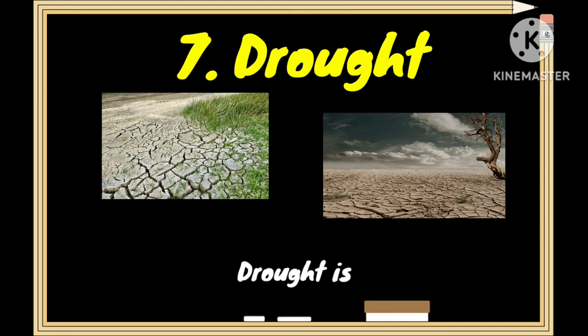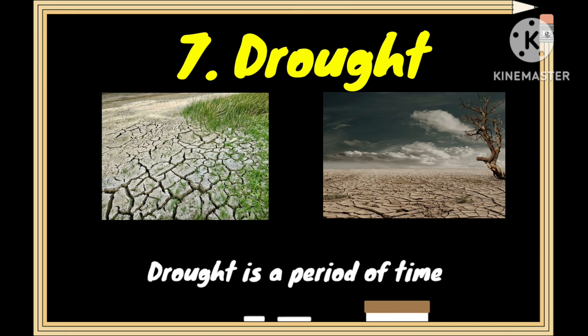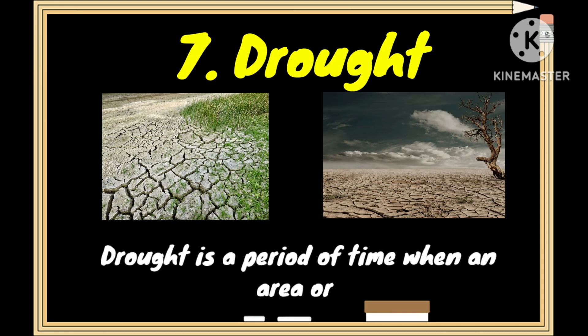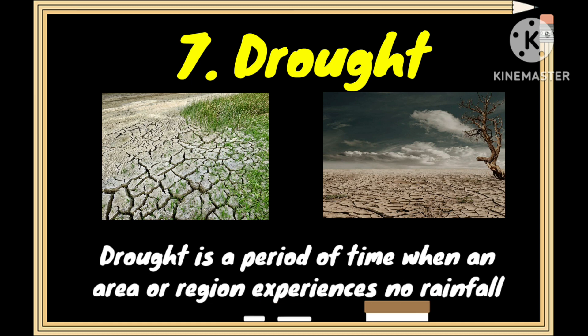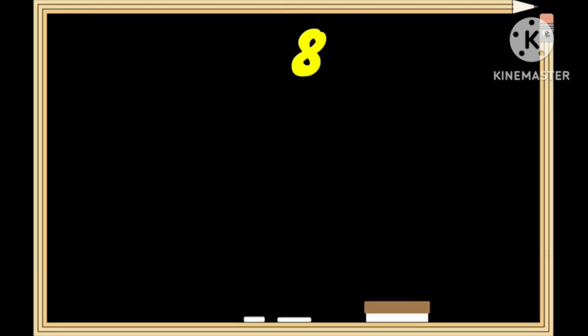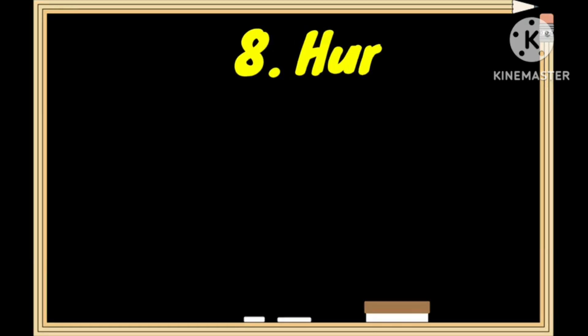Drought. Drought is a period of time when an area or region experiences no rainfall.